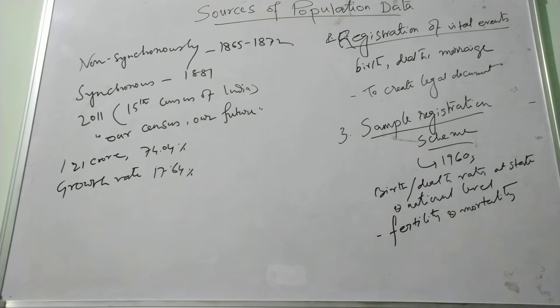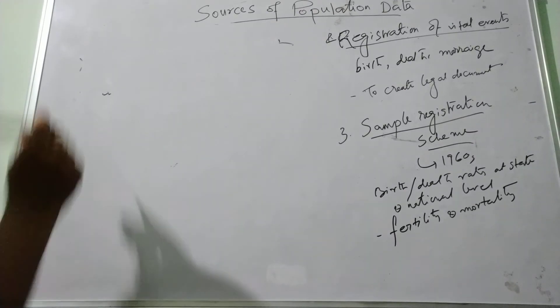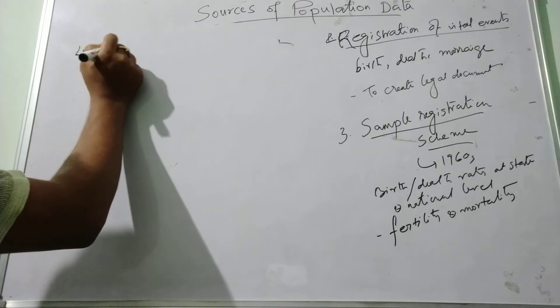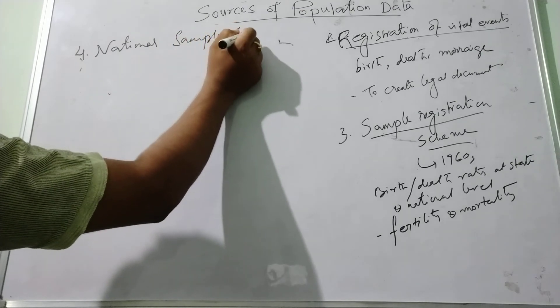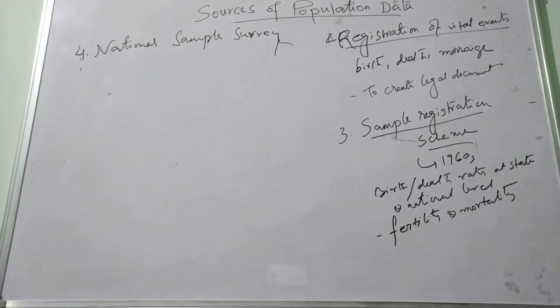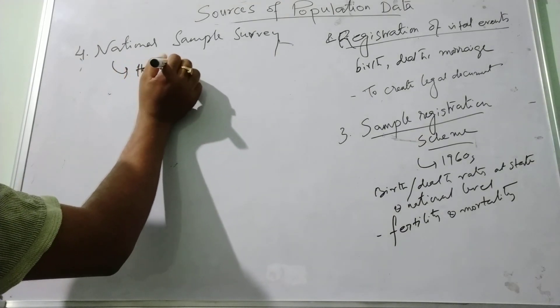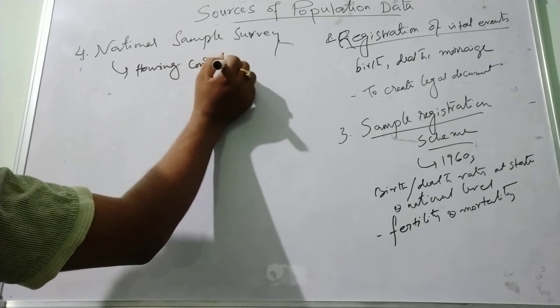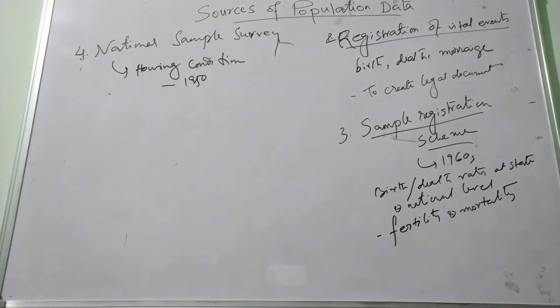Next is the national sample survey. This national survey conducted an indicated survey covering the various aspects of housing conditions during the periods from the 1950s.